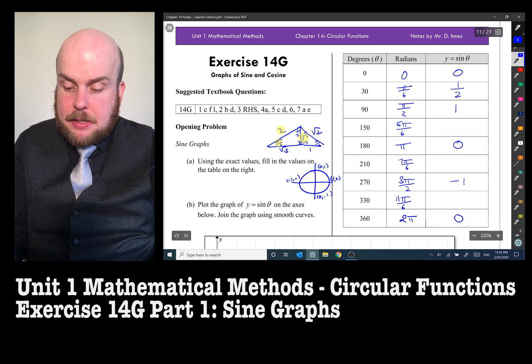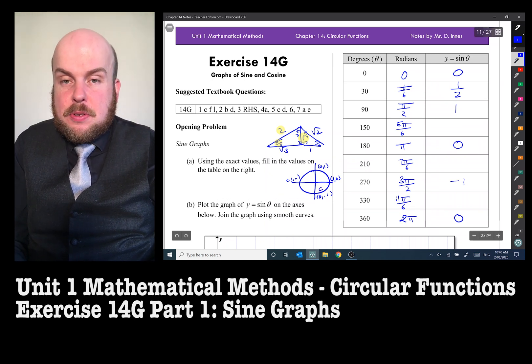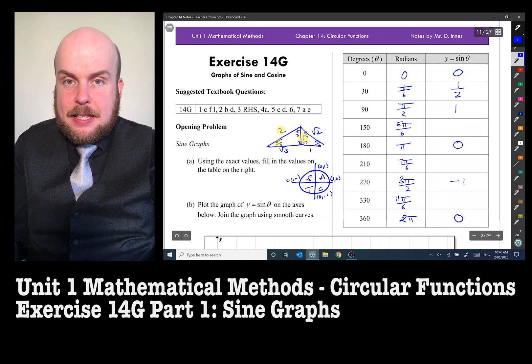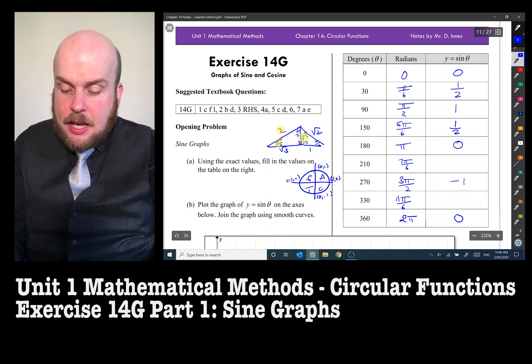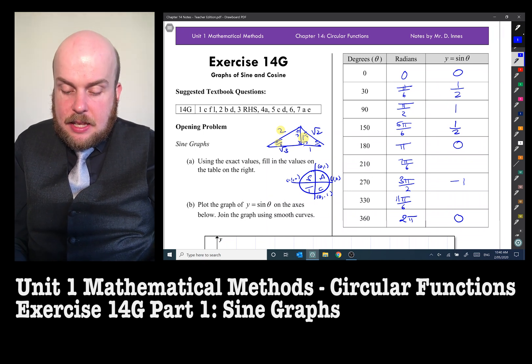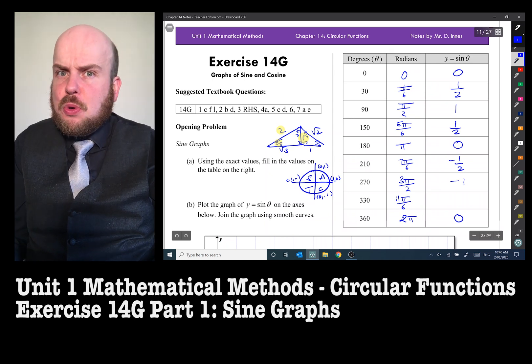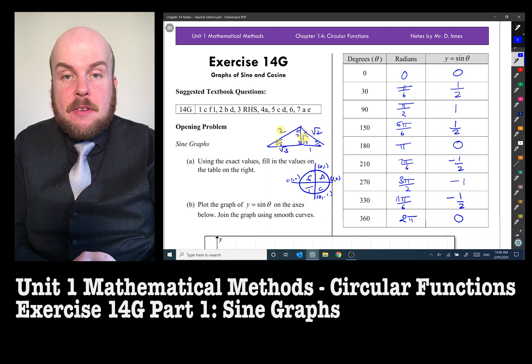For pi on 6, it becomes a half. In 150, it's in the second quadrant. If you will remember that sine is positive in the second quadrant, so therefore that's going to be a half. 210, that's in the third quadrant, that's going to be negative. And in the fourth quadrant, it's also going to be negative.